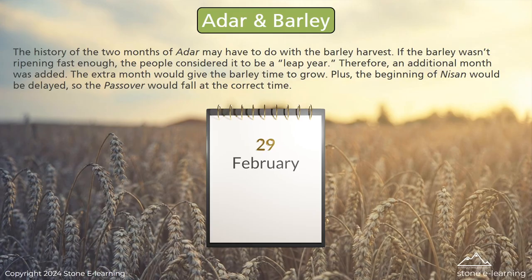The history of the two months of Adar may have to do with the barley harvest. If the barley wasn't ripening fast enough, the people considered it to be a leap year and an additional month was added. The extra month would give the barley time to grow, and the beginning of Nissen would be delayed so the Passover would fall at the correct time.